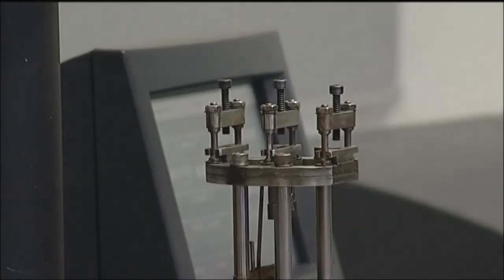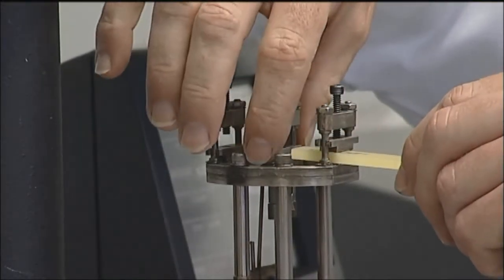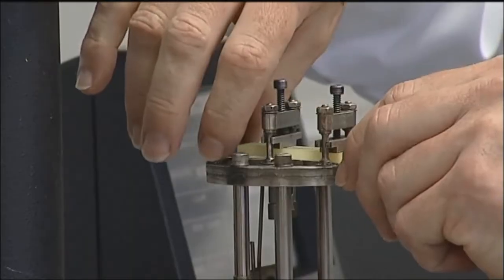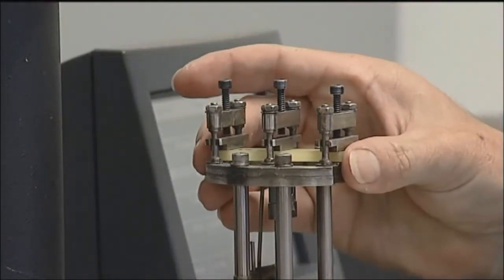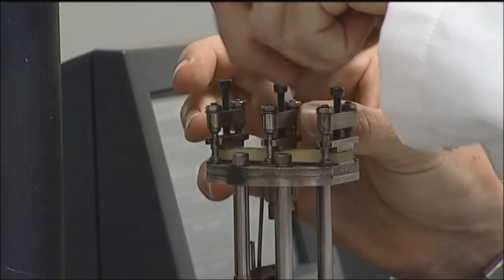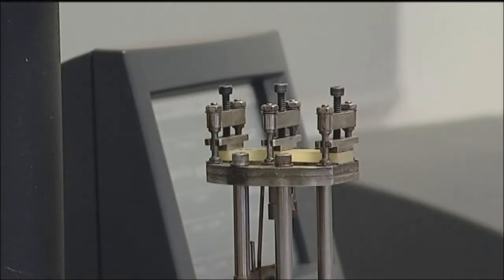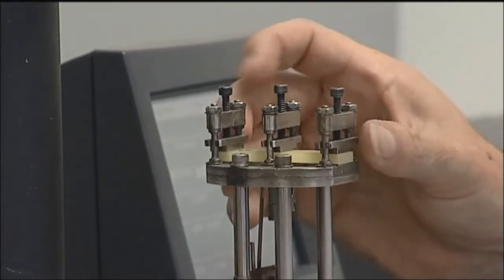Now we need to mount the sample inside the dual cantilever in the DMA instrument. We just put the sample inside and tighten up the screws of the dual cantilever. And use this special screwdriver to tighten it up.